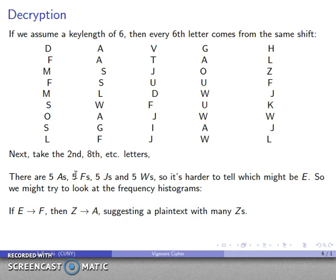What if E gets sent to F? This common letter A must have come from a Z. I have many Zs in my plaintext, which is a little bit peculiar. If E gets sent to J, this common letter A is going to come from V, and I have a plaintext with many Vs in it, which is somewhat unusual.